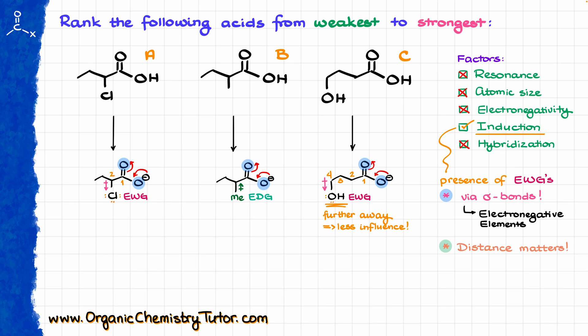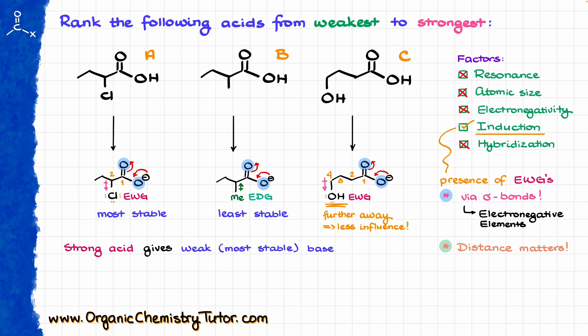Looking at all three conjugate bases, I can say that the one with chlorine is going to be the most stable one, while the one with the methyl group is going to be the least stable one because we do not have any extra stabilization effects — an electron-donating group pushes electron density towards the carboxylate, which already has a negative charge and really doesn't want extra electron density. Strong acids give weak, or stable, bases, which means that our most stable conjugate base comes from the strongest acid, while our weakest acid gives us the least stable or strongest base. So our ranking starts with molecule B as our weakest carboxylic acid, then molecule C, and finally molecule A as our strongest acid.